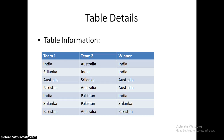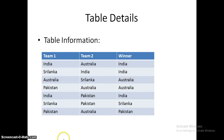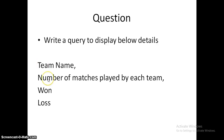From team1, India played 2 matches, and from team2, India played only 1 match. Overall, India played 3 matches. So from our query, we need to get the team name as India, number of matches played as 3, wins as 3 — India won 3 times — and losses as 0. The first column is team name, then number of matches played by each team, number of matches won, and number of matches lost. We will see how to write a query for this question.